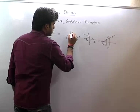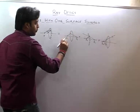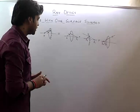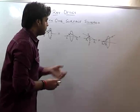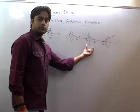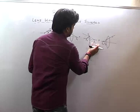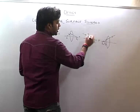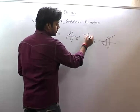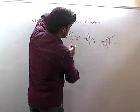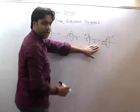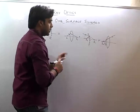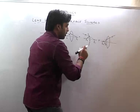The ray came from the object, it refracts through the lens and forms image I1. This image I1 then acts as an object for the mirror. The mirror forms image I2 from this.